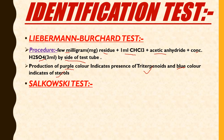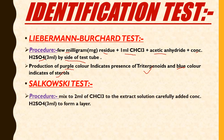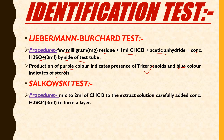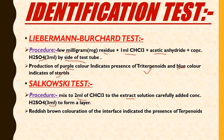The next identification test for terpenoids is the Salkowski Test. In this procedure, mix 2 ml of chloroform with the extract, then carefully add concentrated H2SO4 along the walls of the test tube, forming a layer. The observation is that a reddish-brown coloration indicates the presence of terpenoids.